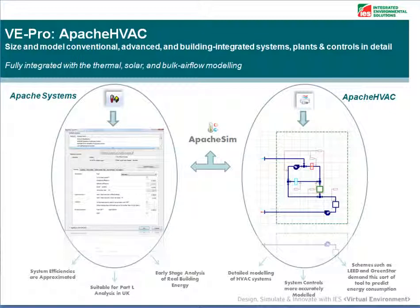Apache Systems allows you to create simple system representations in the Apache Systems dialogue, allowing the input of seasonal energy efficiencies for heating and cooling plant, as well as auxiliary energy values to represent the power consumed by pumps, fans and controls, so the system efficiencies are approximated.